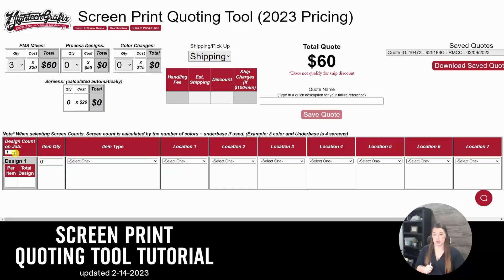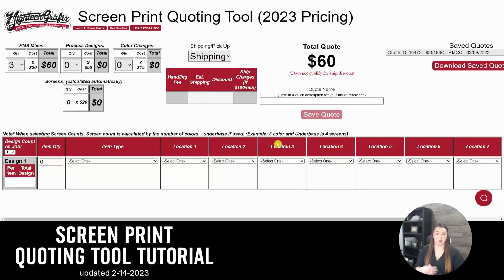So for design, we'll start with this section. I do want to reiterate, we love to be transparent here — no surprise fees, it's never our goal. When selecting screen counts, screen count is calculated by the number of colors plus the underbases used. For example, if you have a three color design going on colored apparel, we count that as four colors and four setups. Our underbase counts as an additional color and setup. Again, we don't want any surprises on the invoices.